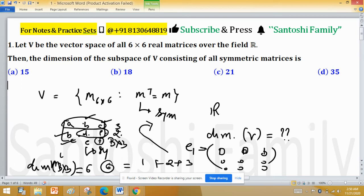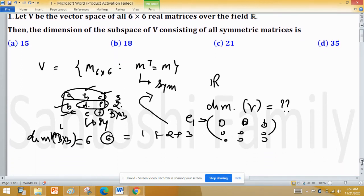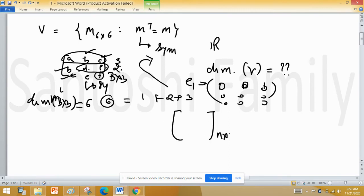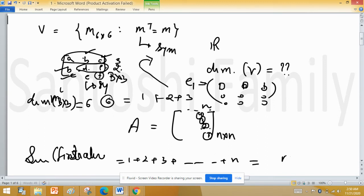If we generalize this method, then for an n by n symmetric matrix A, how will we calculate its dimension? One entry here, 2 entries in the preceding row, 3 above, 4, and so on up to n. Find the total number of unique entries: 1 plus 2 plus 3 and so on up to n. This is nothing but the sum of first n natural numbers, which we all know is n times (n plus 1) divided by 2. This is the general formula for the dimension of a symmetric matrix.